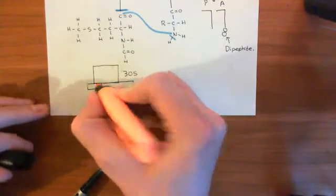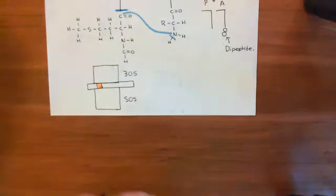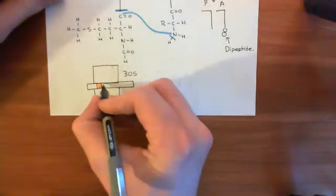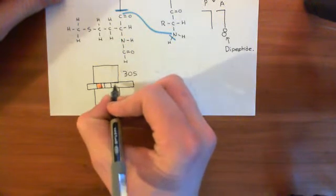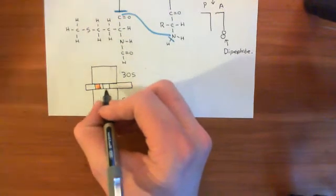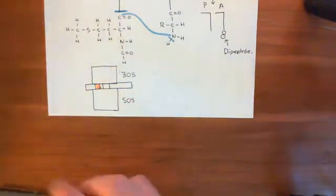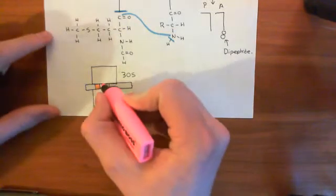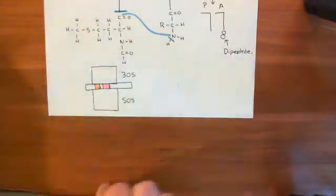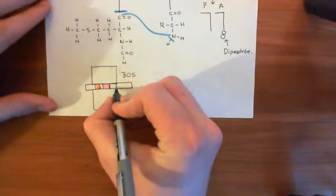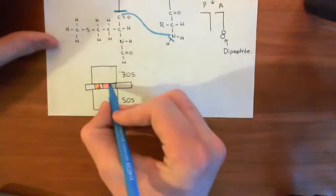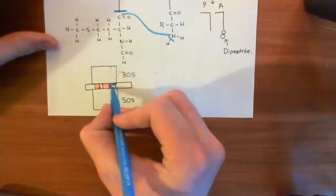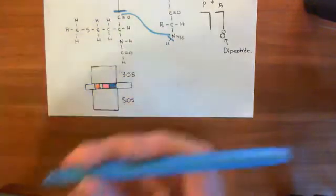I'll color it in orange, which is the color we've been using to denote the Shine-Dalgarno sequence. Then downstream of that, we have this start codon here, which we've always denoted in pink. And then after that, we have this second codon on the mRNA, which was colored in blue in our previous picture.